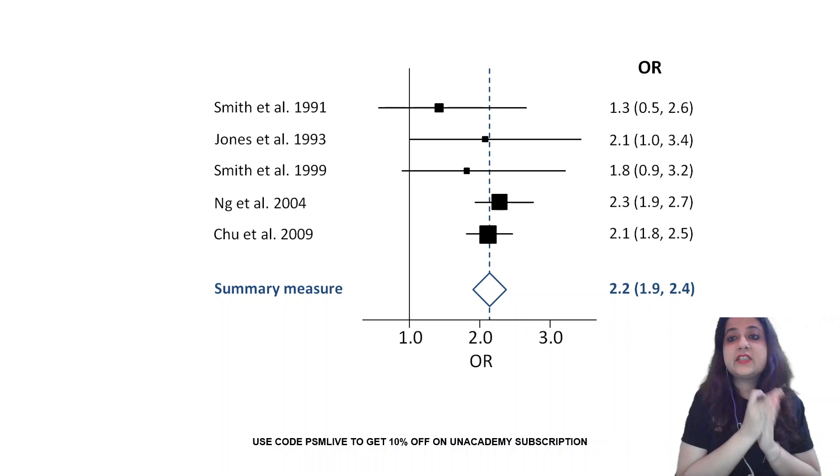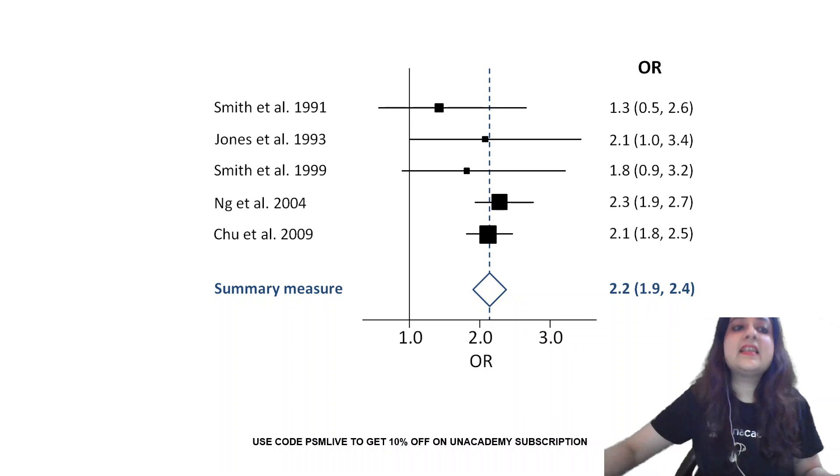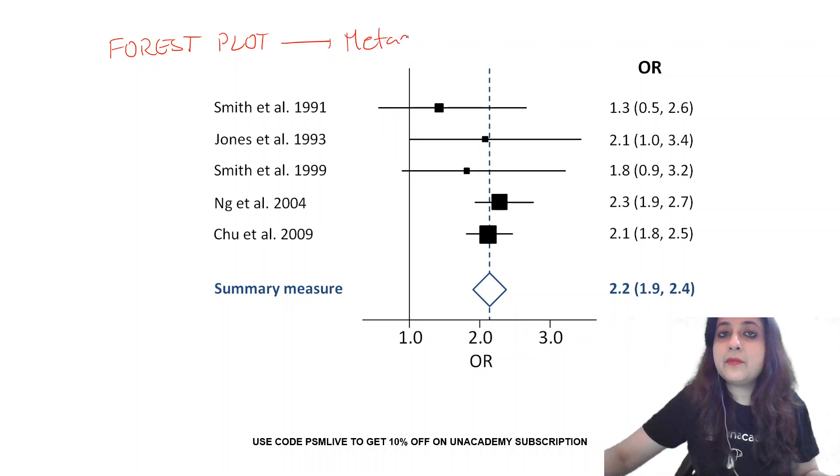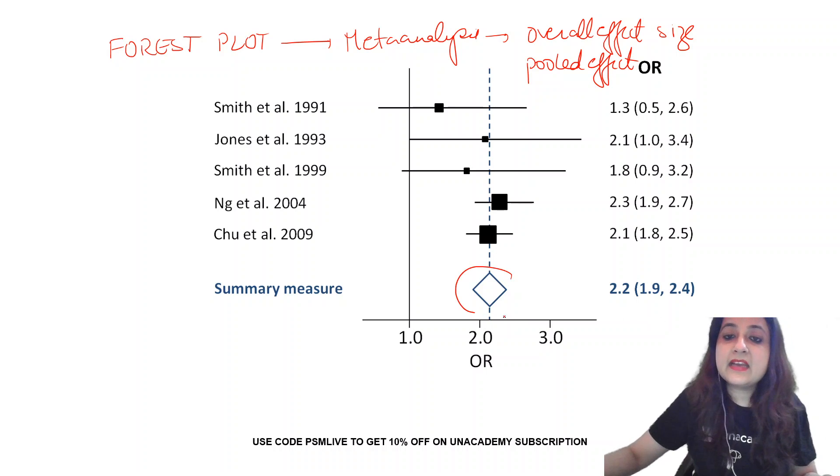So what is this first image for the day? This is a forest plot everybody. And where is a forest plot constructed? Forest plot is constructed in a meta-analysis. What does this forest plot represent? This represents the overall effect size, or you could also say the pooled effect. This is demonstrated by a diamond.